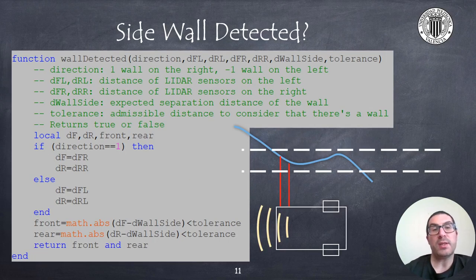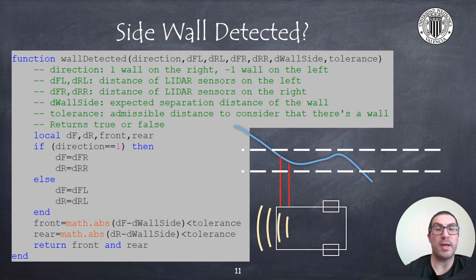Also, the wall detected function you can see here will return true or false based on the distance returned by the lidar sensors. In this case, if the distance of the sensors is within the expected band or range, it will return true. This depends on the tolerance parameter and also on the default_side parameter, which is basically the medium distance or expected distance for the sensors. Actually, this function again is quite similar to the one we already saw in the video for solving mazes with proximity sensors.